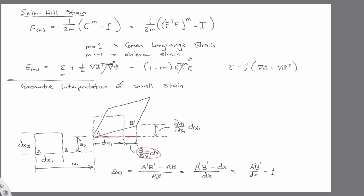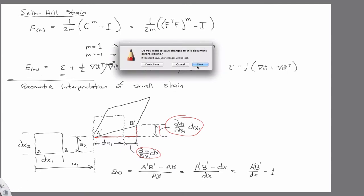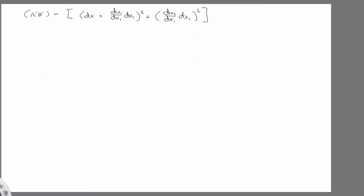And then here, this change is defined here. So that's this, and then we're just using the Pythagorean theorem to define a prime b prime. To the one-half power, the square root is the sum of the squares.